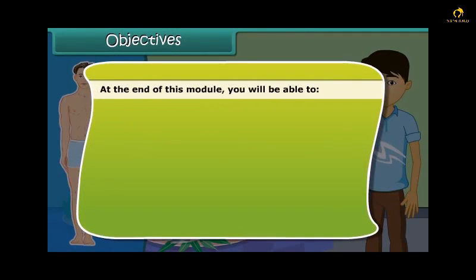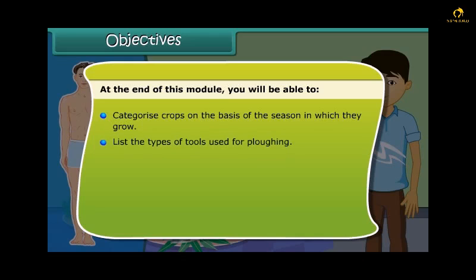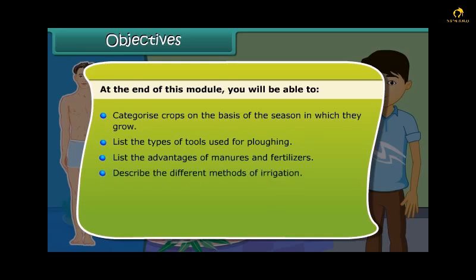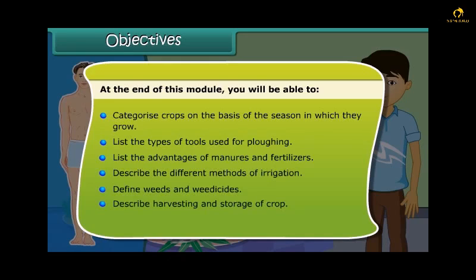At the end of this module, you will be able to: categorize crops on the basis of seasons in which they grow; list the types of tools used for plowing; list the advantages of manure and fertilizers; describe the different methods of irrigation; define weeds and weedicides; and describe harvesting and storage of crop, and explain animal husbandry.